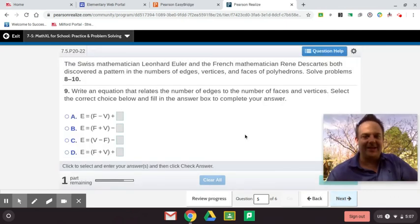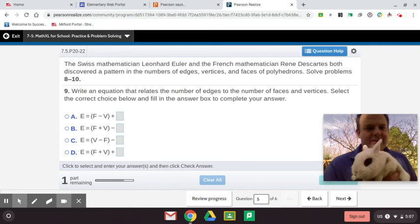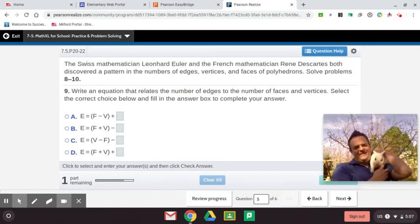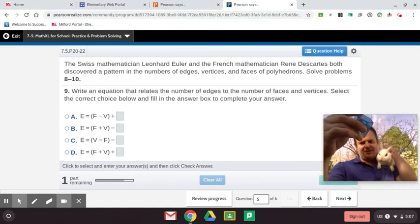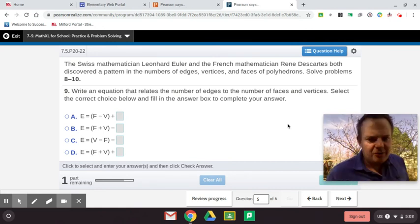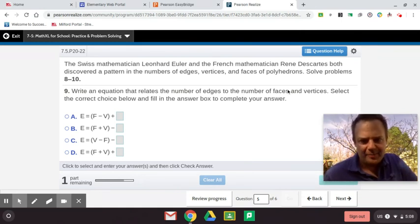So really get this and look, they did it again. Here comes the Swiss magic. I was about to say magician because I'm a magician, but the Swiss mathematician Leonhard Euler and the French mathematician René Descartes both discovered a pattern in the number of edges, vertices and faces of polyhedrons. Solve these problems here. Write an equation that relates the number of edges to the number of faces and vertices. Select the correct choice below.